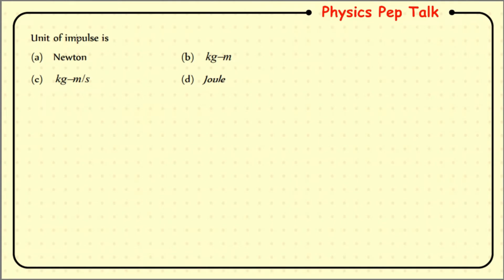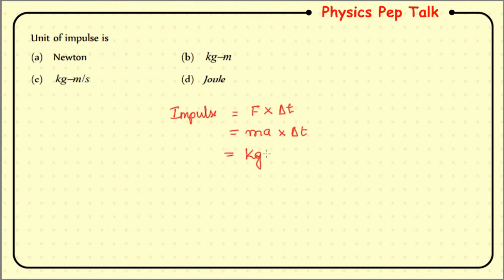Next question: the unit of impulse. Impulse is defined as a large force acting on an object in a very short interval of time, given by F times delta t. Working out the units: mass in kg, acceleration in meter per second square, time in second gives kg·m/s. Therefore option C, kg·m/s, is the correct answer.